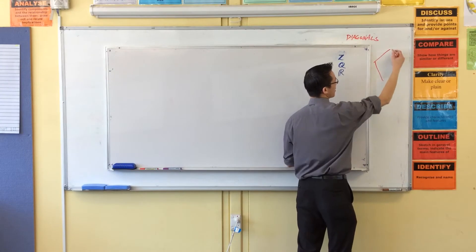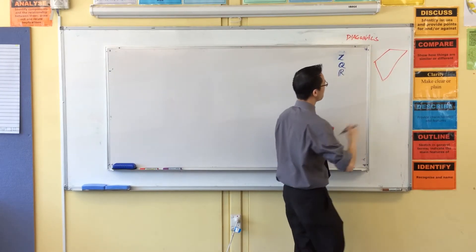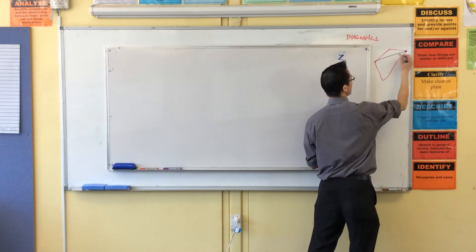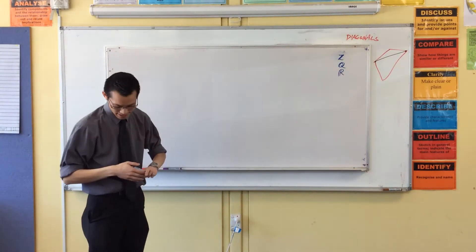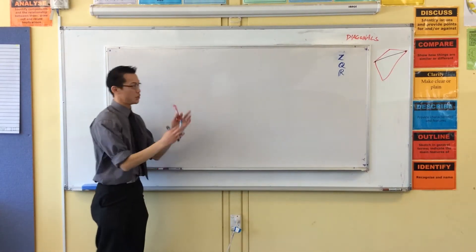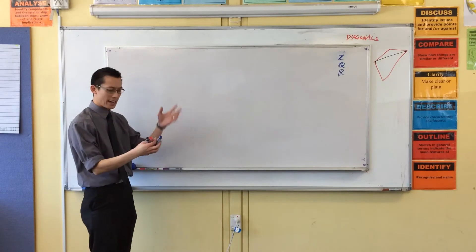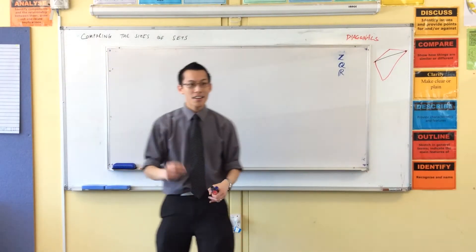Like, this is a diagonal, right? Here we go, let's draw one in. That's a diagonal. What's useful about diagonals? The answer is a lot. Now, before I show you how they're useful, let's make a heading: comparing the sizes of sets. Okay, so here's my question.